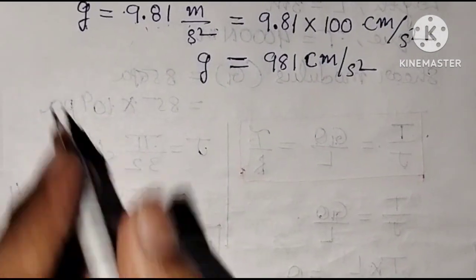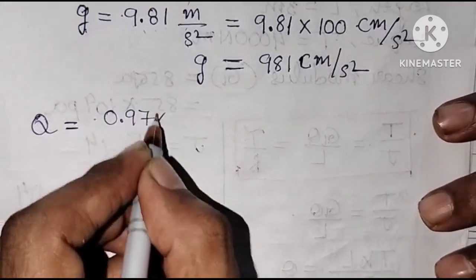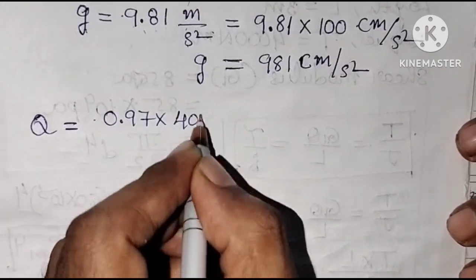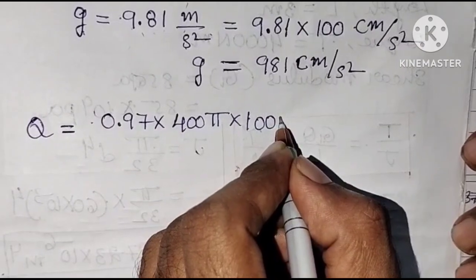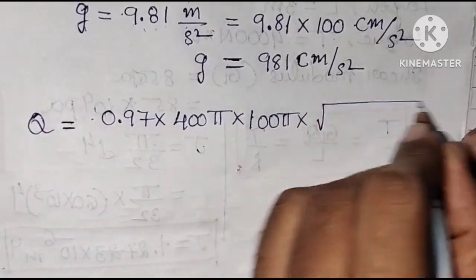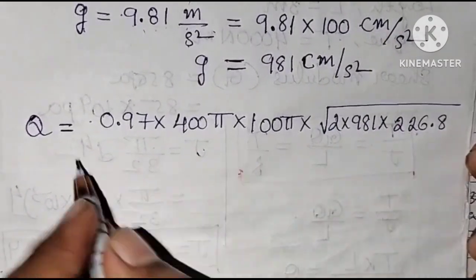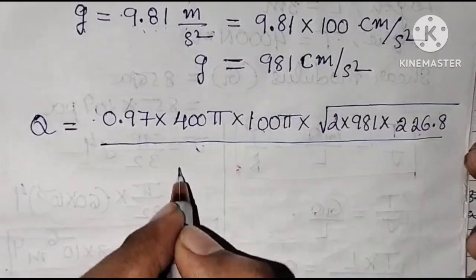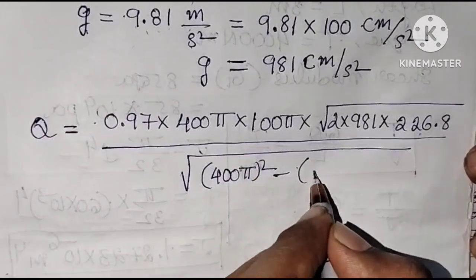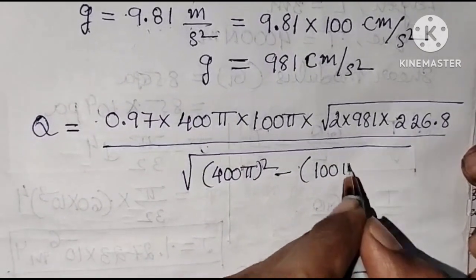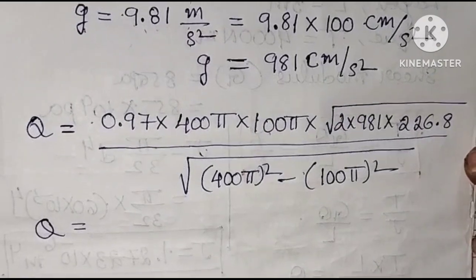Now Q = 0.97 × 400π × 100π × √(2 × 981 × 226.8) / √(400π)² − (100π)². This simplifies to Q = 0.97 × 4 × 10⁴ × π² × √(1962 × 226.8) / √(400π² − 100π²). The numerator evaluates to approximately 25,547,994.61, and the denominator's square root evaluates to approximately 1,216.7.